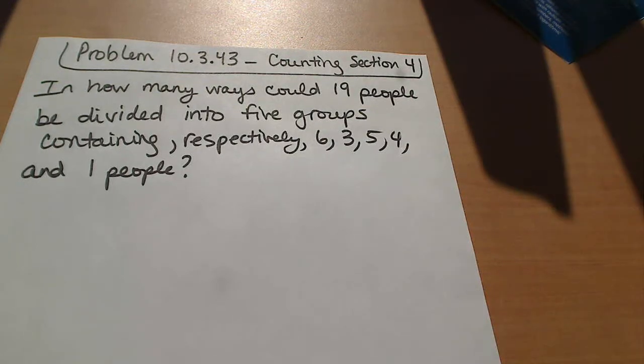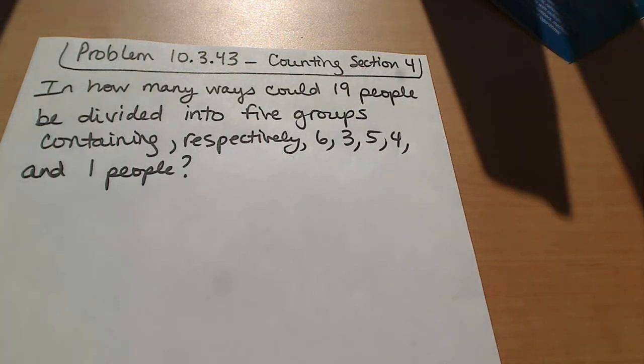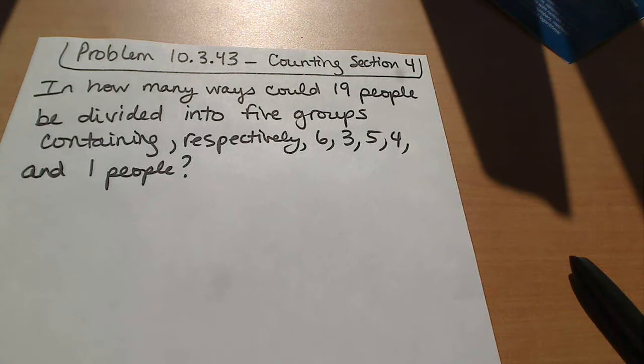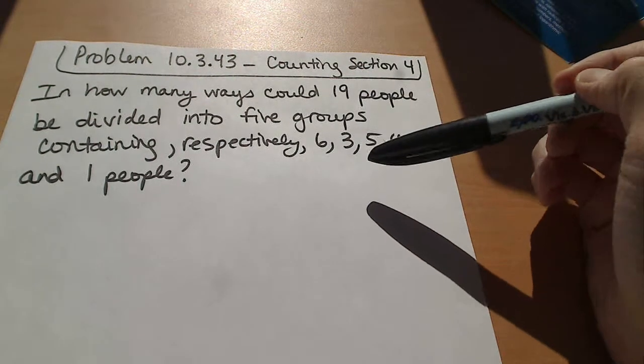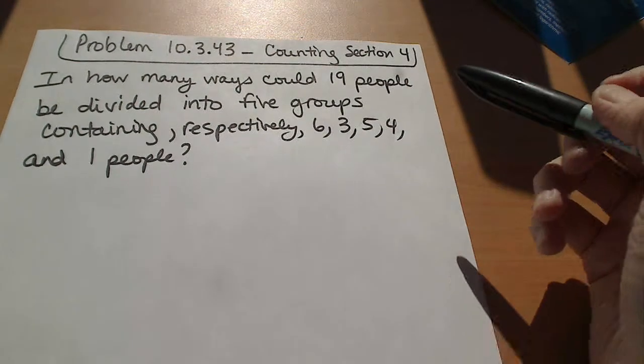All right, so this is problem 10.3.43, and it's from counting section 4. The question asks, in how many ways could 19 people be divided into 5 groups containing respectively 6, 3, 5, 4, and 1 people?